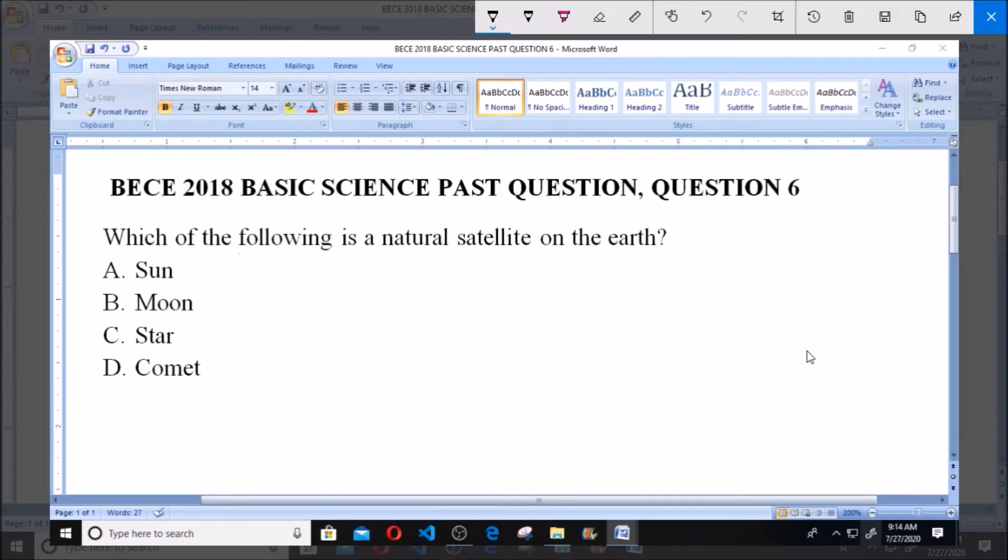Which of the following is a natural satellite of the earth? A - sun, B - moon, C - star, and D - comet.